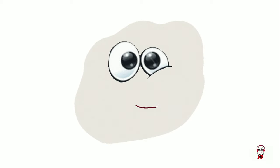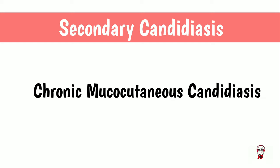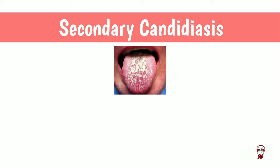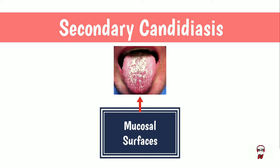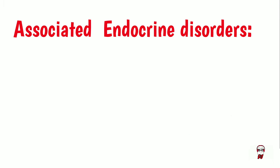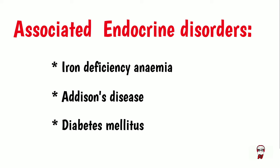These are the various forms of primary candidiasis, all restricted to the oropharyngeal areas. But sometimes I involve systemic manifestations, or secondary candidiasis, also called chronic mucocutaneous candidiasis. In addition to candidal infections of the mouth, I infect other mucosal surfaces such as the skin and nails. This can be due to autoimmune disorders of the host and can cause endocrine disorders such as iron deficiency anemia, Addison's disease, and diabetes mellitus.